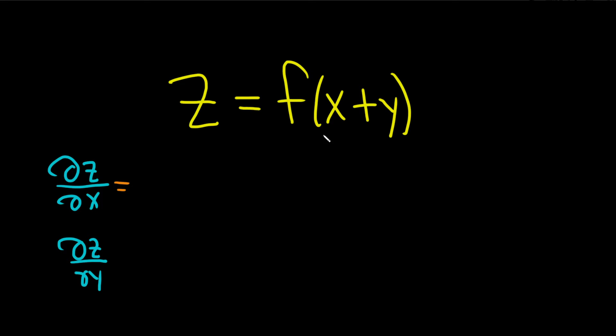Okay, so we have f of x plus y. So we're going to use the chain rule. The chain rule says you take the derivative of the outside, so your outside function is f, so it's just f prime, and then you leave the inside untouched, so x plus y. And then you multiply by the derivative of the inside.